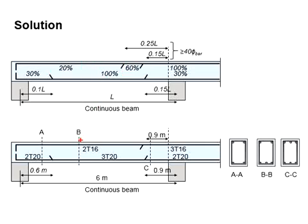However, we need to maintain at least 2T16 throughout the beam. If you wish to reduce the reinforcement bar more, you may provide 2T12 here and keep 2T16 at this region. However, you need to provide adequate length for the reinforcement bar.